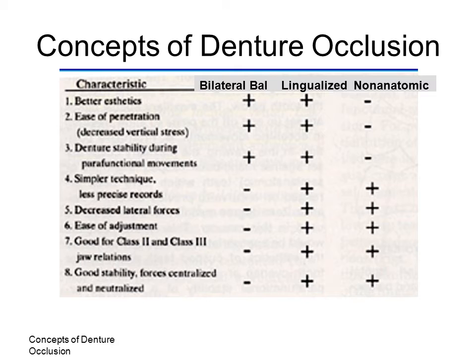The non-anatomic concept uses a more simple technique. Lateral records are not required. Decreased lateral forces with the non-anatomic scheme are more favorable in patients with highly resorbed ridges. It is a simpler scheme to develop and adjust and is used in patients with mal-related jaws, poor muscular coordination, and in patients for whom a repeatable MMR is not obtainable.